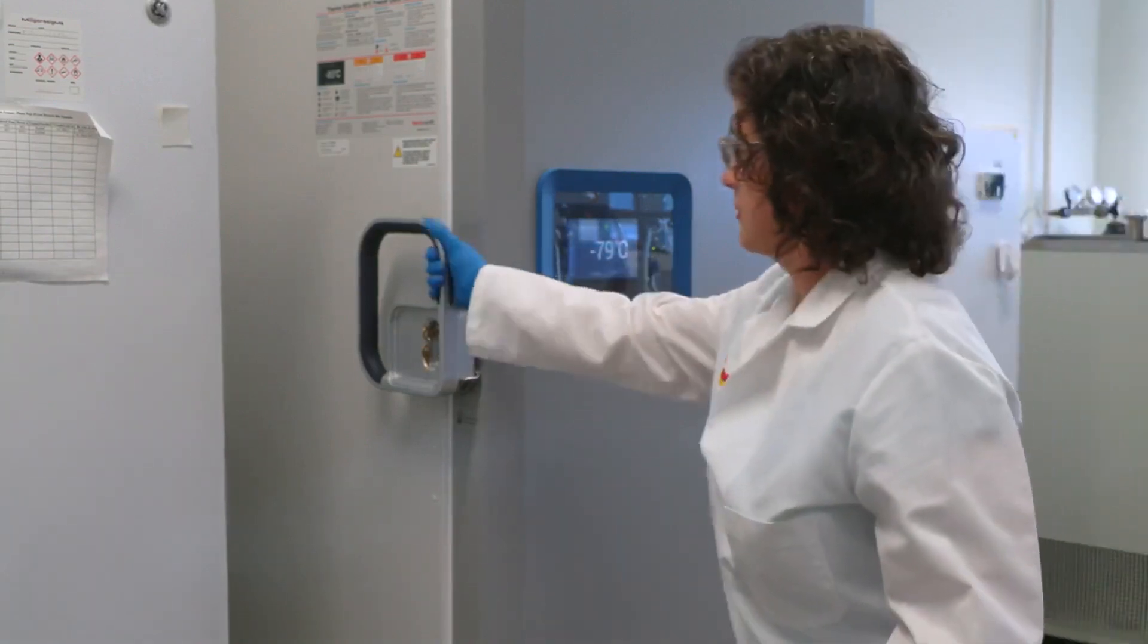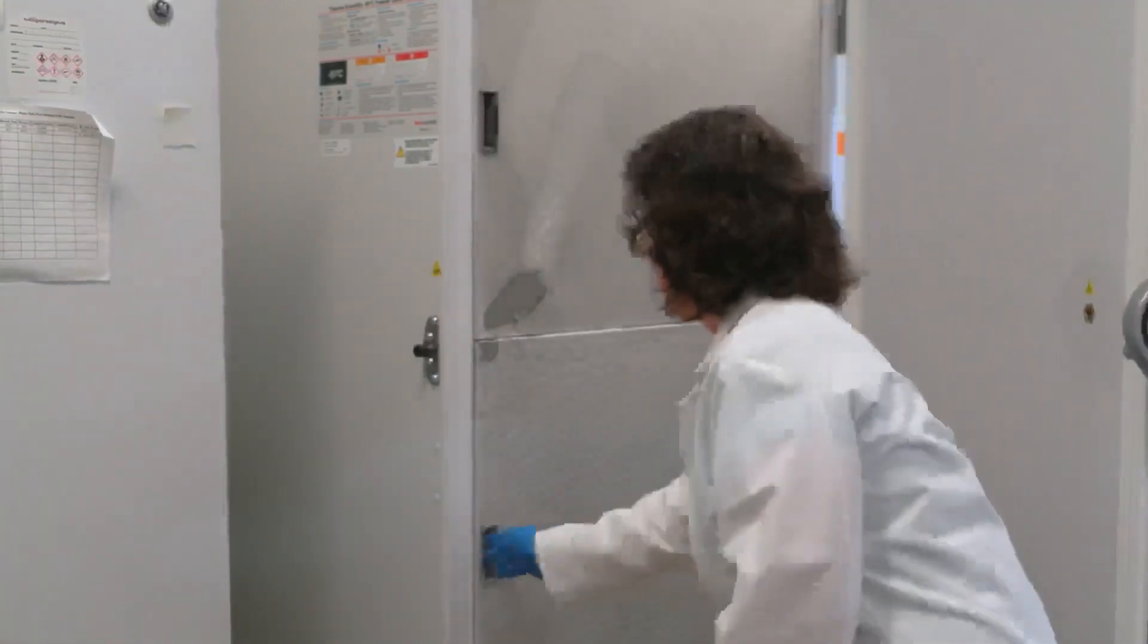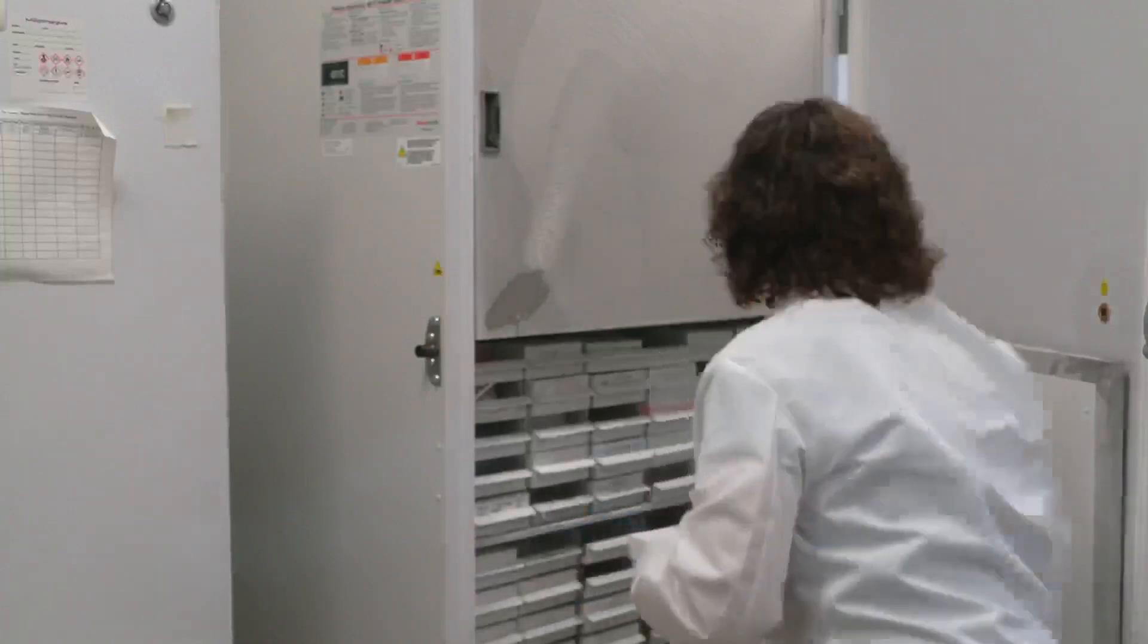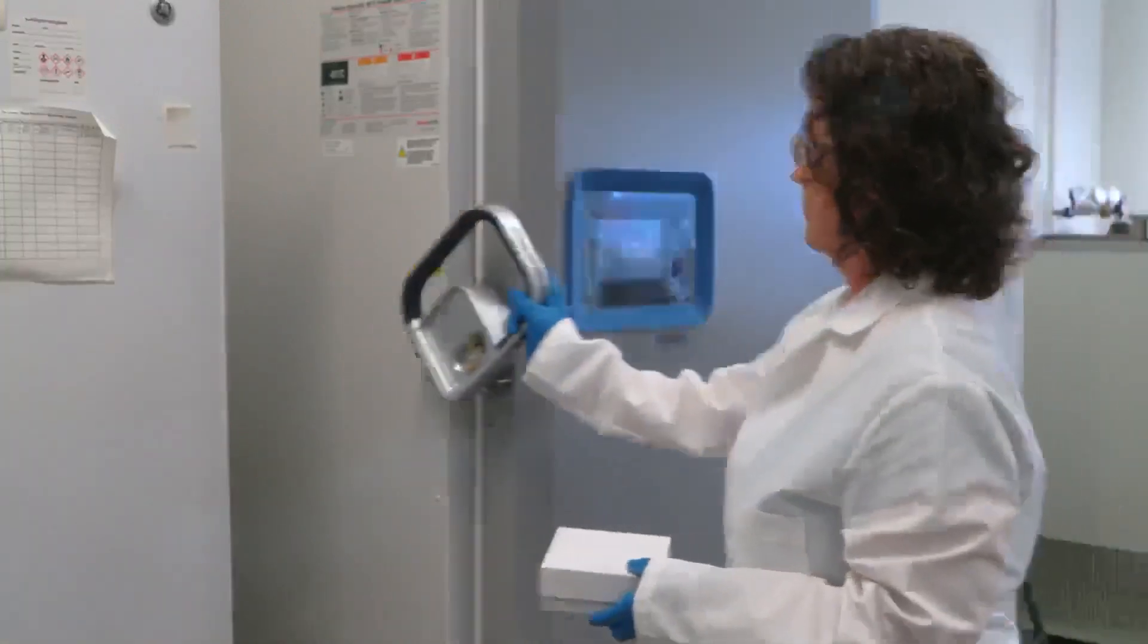After serum or plasma samples are separated, they can be assayed immediately, or the samples can be aliquoted and stored at minus 20 to minus 80 degrees Celsius.